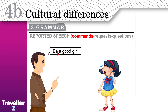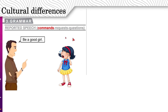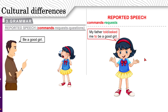A command is something like this: Be a good girl. Do your homework. Eat your food. These are commands. To report that, you say: My father told me — or asked me — to be a good girl. We copied everything and started with 'my father told me or asked me,' and we added 'to' — this is important. To be a good girl. Do your homework becomes: My father told me to do my homework. To listen to him. To eat my food.